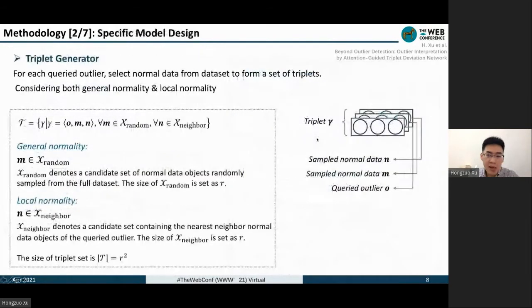The first one is the triplet generator. These triplets are utilized to learn the separability of the query outlier from normality. Therefore, the first triplet position is fixed as the query outlier, which is one data object.